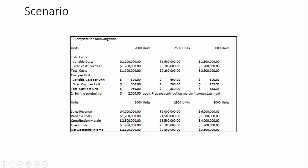The contribution margin is the difference between sales revenue minus variable costs. In the first scenario that gives us $2.8 million, and we do the same calculation all the way across. Then we subtract the fixed costs of $700,000 from the contribution margin to get net operating income, using the same formula across all scenarios.